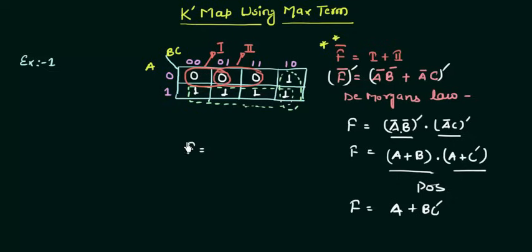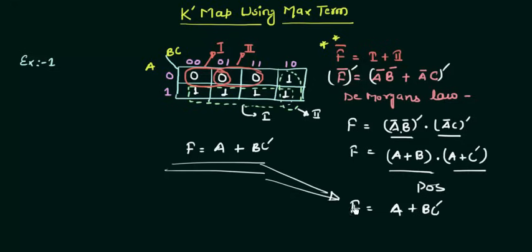Now I am writing it as F, not as F complement like here, because I am combining the ones. So for this one, let's say this is 1, this is 2. For this one it is A simply, because both B and C are changing. And for this 2, we are having BC complement, because A is changing in this group from 1 to 0. So you can see that these two things are same.